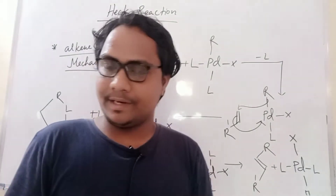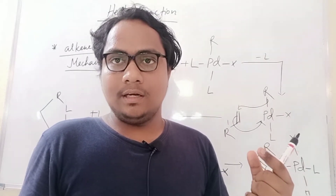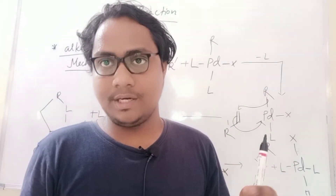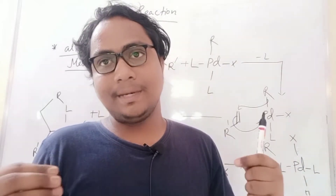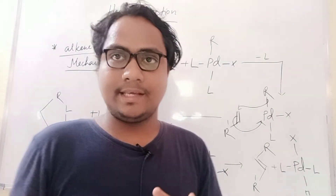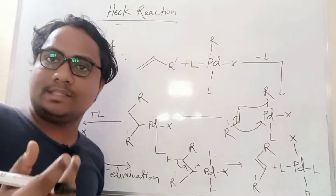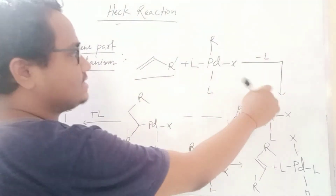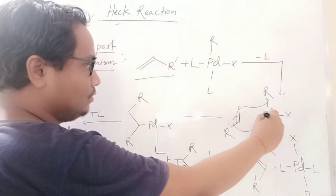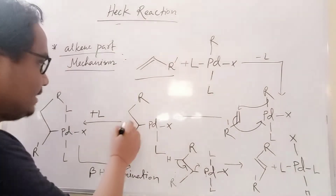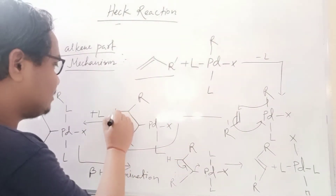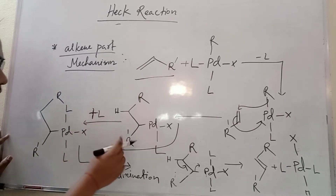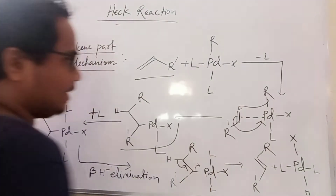In the Heck reaction, alkyl halide in the presence of palladium catalyst couples with a simple alkene containing beta hydrogen to undergo coupling and give a substituted alkene. In the first part, the catalyst binds: the alkene which has a beta hydrogen has one ligand with a vacancy — a 14-electron species. Then migration occurs, the double bond is reduced, one hydrogen comes, and this is called beta-hydrogen elimination.